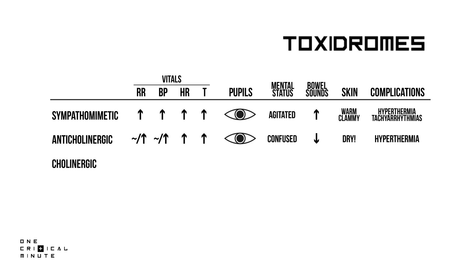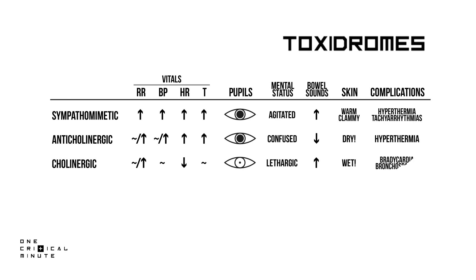Cholinergics like certain pesticides can cause profound bradycardia and with that cardiac arrest. Their pupils are constricted and their skin is wet. Their mental status is normal to lethargic. Also watch out for bronchospasms.